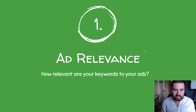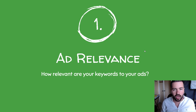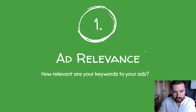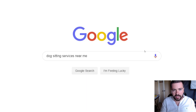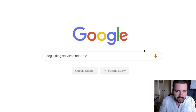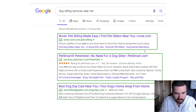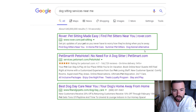Ad relevance really comes down to organization in your account. A lot of success with Google Ads comes down to being well organized — how organized are your keywords to your ad groups and your ads? By organizing your ad groups thematically, making sure keywords are grouped nice and tight — no more than 10 to 15 keywords — you maintain high ad relevance. For example, if I search 'dog sitting services near me,' I expect to see an ad that utilizes that keyword 'dog sitting.' Here are the results — they do reference dog, but these advertisers could make their ads even more relevant by using 'dog sitting' instead of 'pet sitting.'